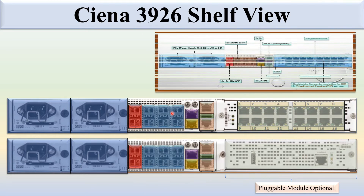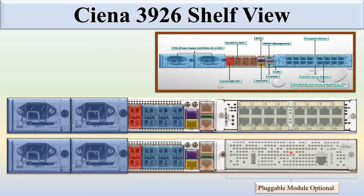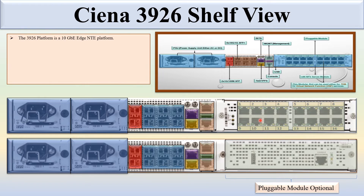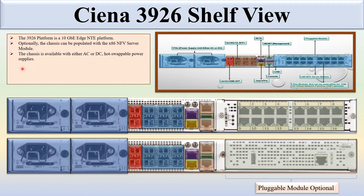This is the self-view of the Sienna 3926. There are two options in which we can use this module. The 3926 platform is a 10 GBE JNNT platform. Optionally, the chassis can be populated with an X86 NFC server module, or you can place the traffic module including the traffic interface slot. The chassis is available with either AC or DC hot-swappable power supplies; you can deploy AC power or DC power, but both together is not possible.